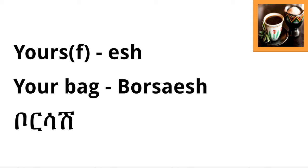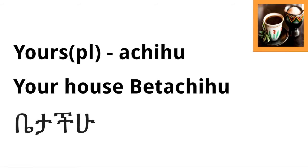There are other ways to express possession and I will be making a follow-up video, so keep an eye out for that. But today we're going over the possession suffixes. Next, for speaking to a group of people, the second person plural possessive ending is '-achu.' So if we want to say 'your house,' house in Amharic is 'bet,' and it becomes 'betachu.'